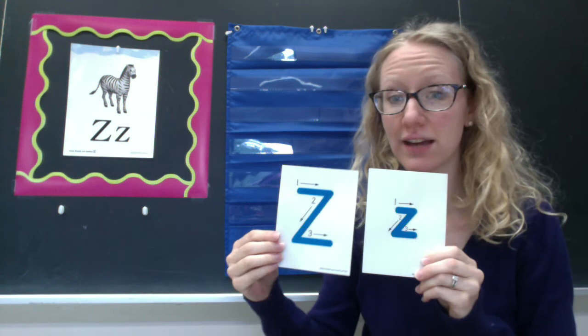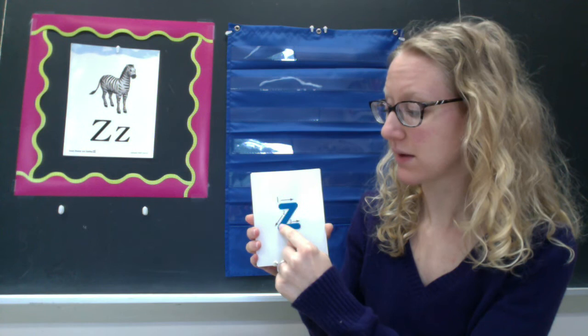To make a lowercase z, it looks almost the same as capital Z, but it's just smaller. You'll start in the middle between the top and the bottom line. A small line to the right, slant down to the bottom, another small line to the right.